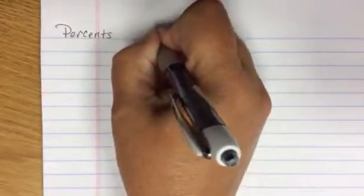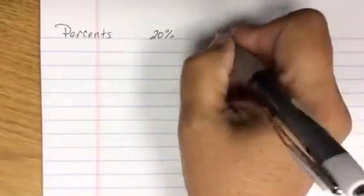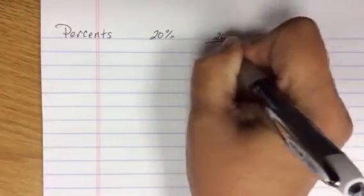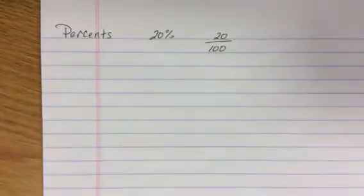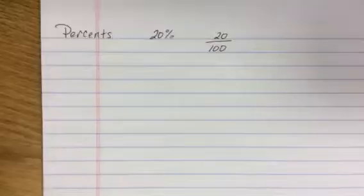Percents can be considered either a fraction or decimal. When you have a percentage, if I wanted to make this into a fraction, I take the percentage and slap it over 100. Whatever the percentage is, it automatically goes over 100. And if I was wanting the fractional format, I'd then reduce.